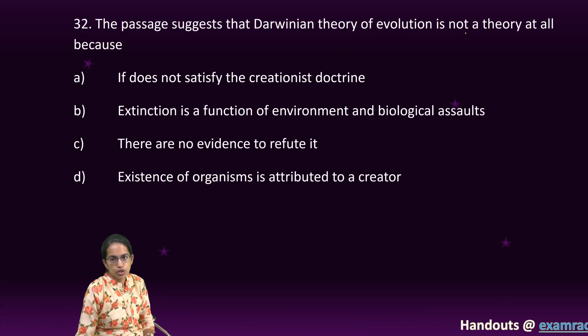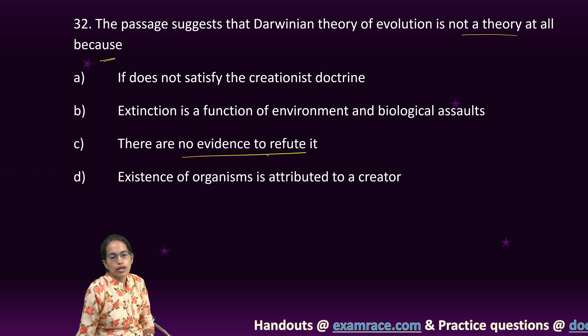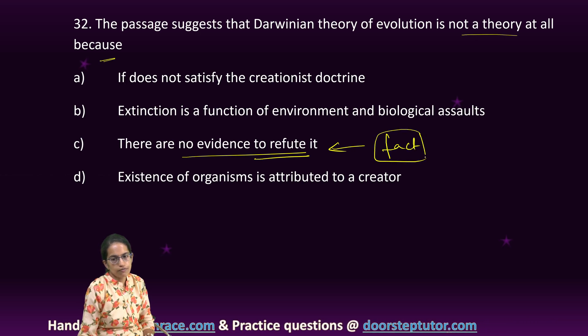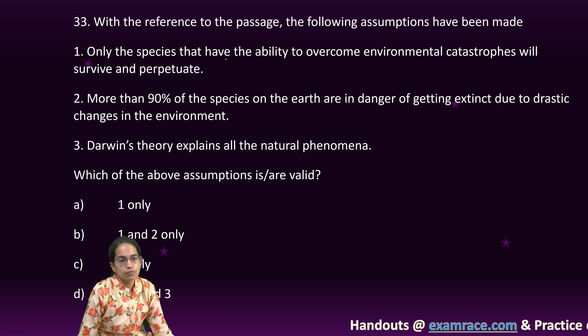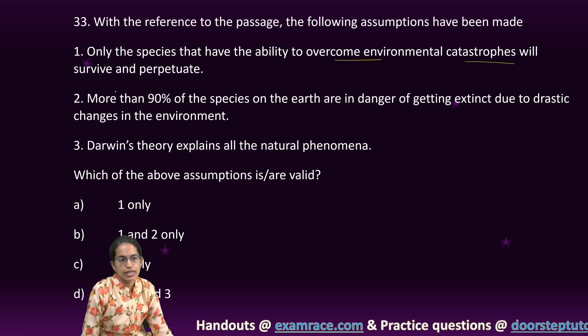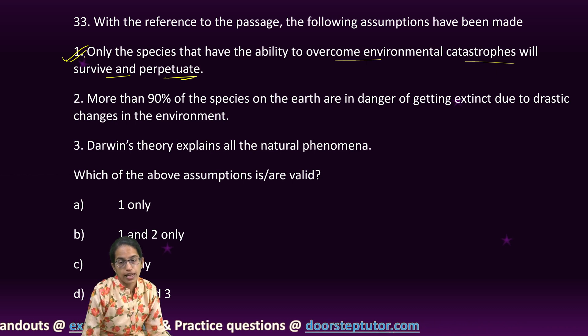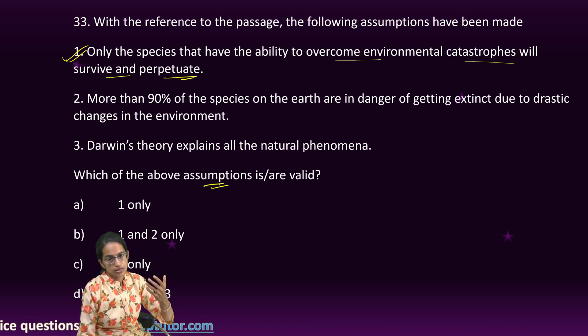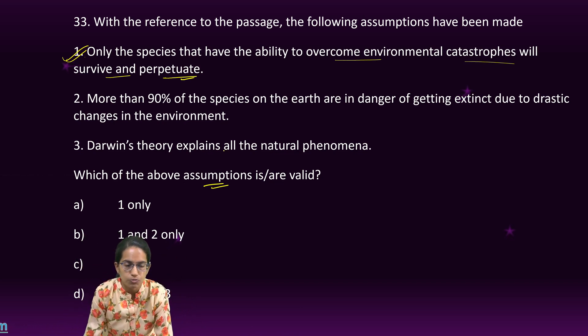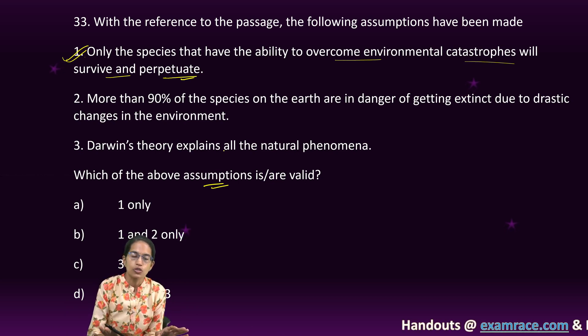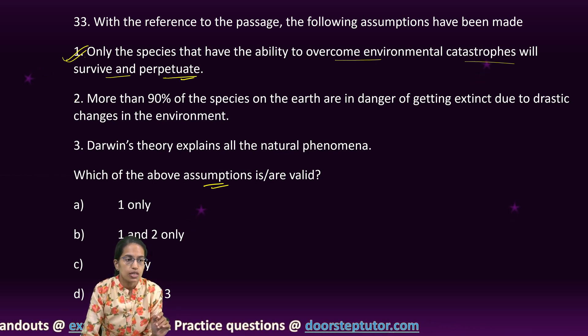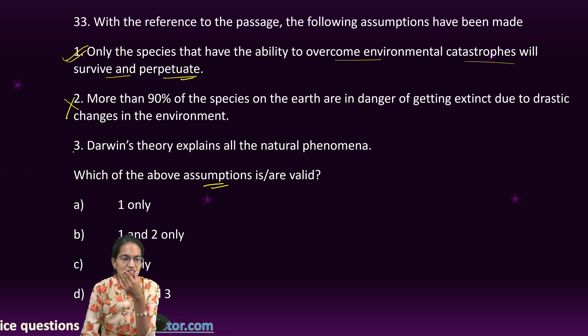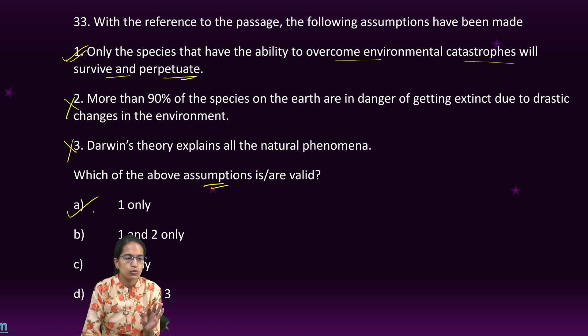The next is the passage suggests that Darwin's theory of evolution is not a theory at all because there is no evidence to refute it. And therefore, it says, the author says, it is a fact and it should be as it is accepted. The next is with reference to the passage, which of the following assumptions can be made? Only species which have the ability to overcome environmental catastrophe can survive and perpetuate. That's something that can be taken from the passage because it says assumption is valid based on the passage. Only the species that have the ability to overcome the catastrophes can survive and the rest genomes would vanish because of the genetic or biological mishaps. 90% of the species are in danger of extinction. Nothing has been mentioned. Darwin's theory explains all natural phenomena is not at all mentioned. So, one only is the right option.